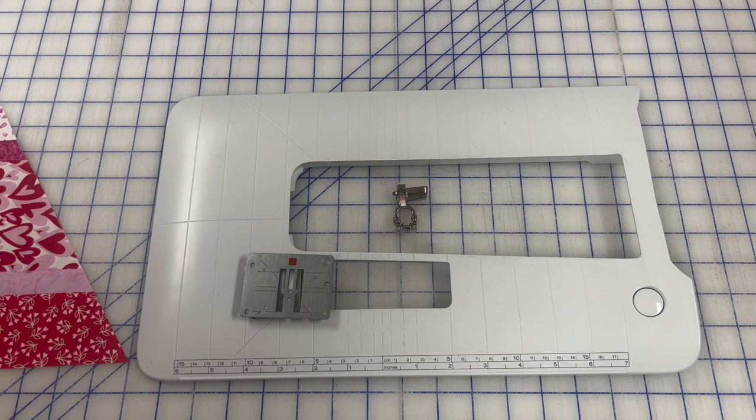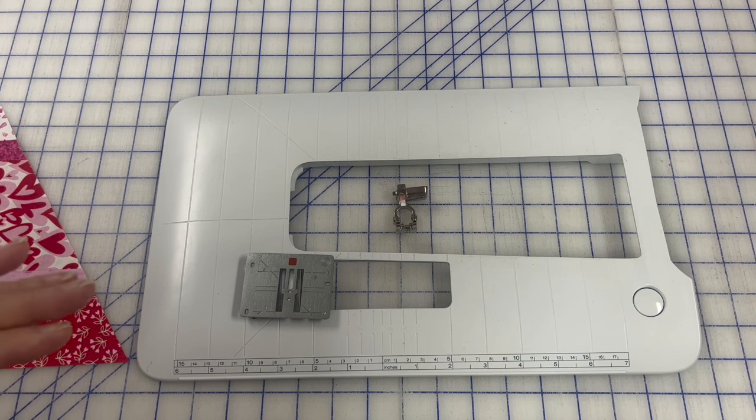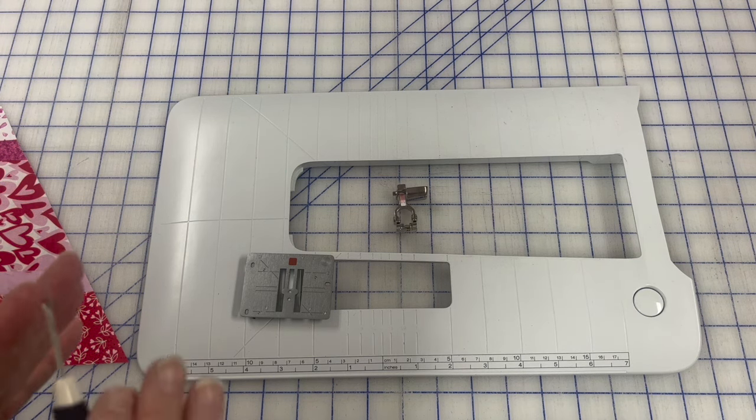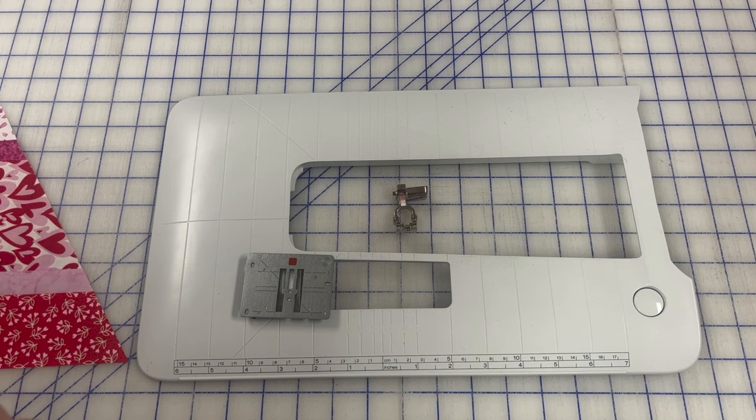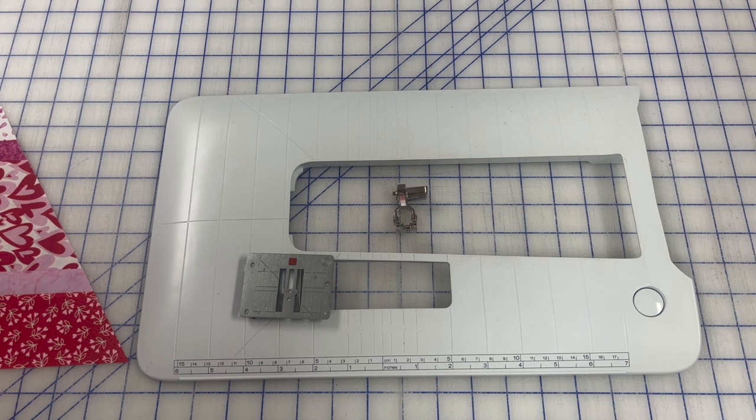One thing that she showed in her video, and we will provide the link for it so you can watch it yourself, is she took painter's tape, stacked up several layers of it, and put it on the bed of her machine and measured a quarter inch from where the needle hit the ruler to where she put the edge of the tape. That's a good temporary result.